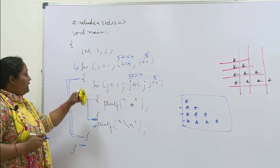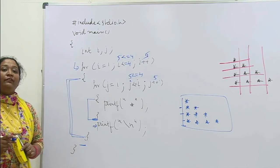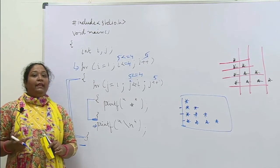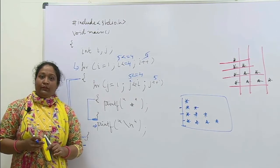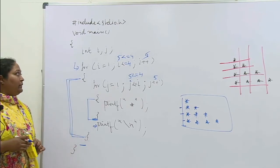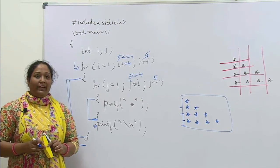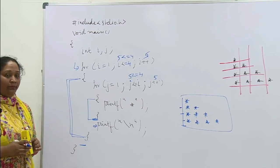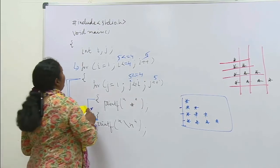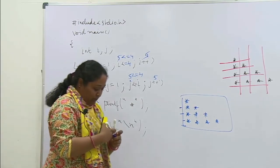Thik hai? To this is the use of nested for loop. Ye apna kya hai? Nested for loop hai. Okay? Thank you. Next class mein apan while aur do while kya hote hain usko samjhenge okay? Main ek baar usko stop kar dete hain.